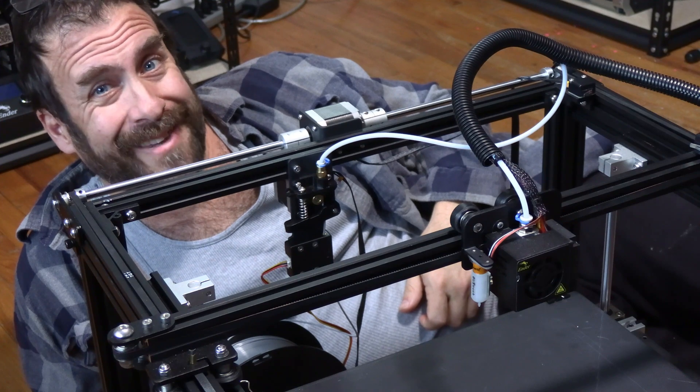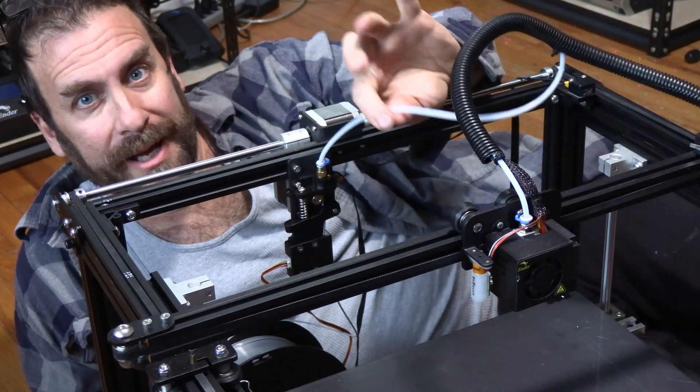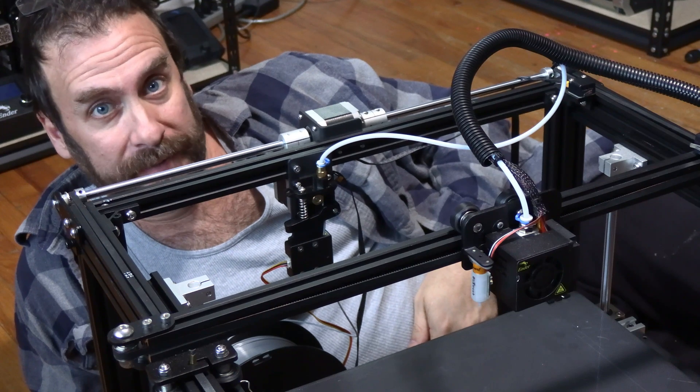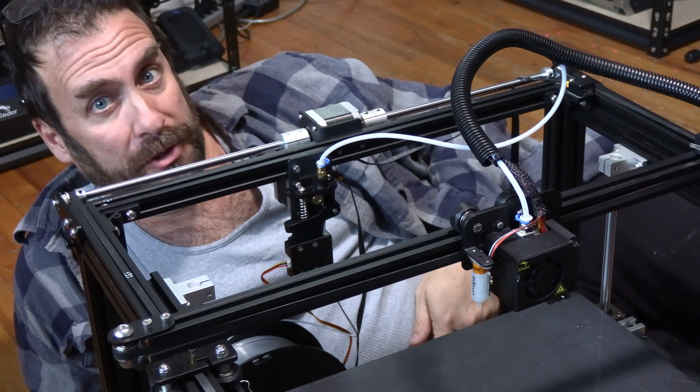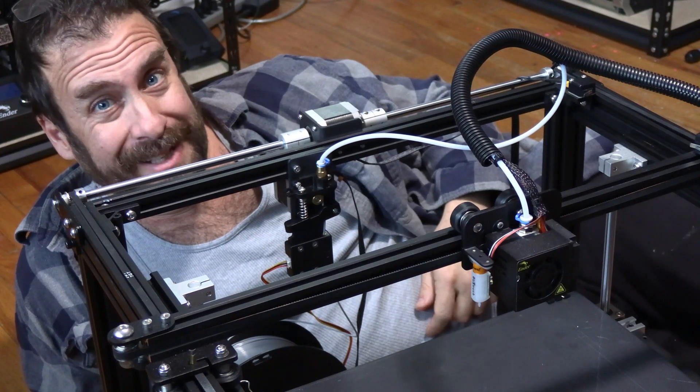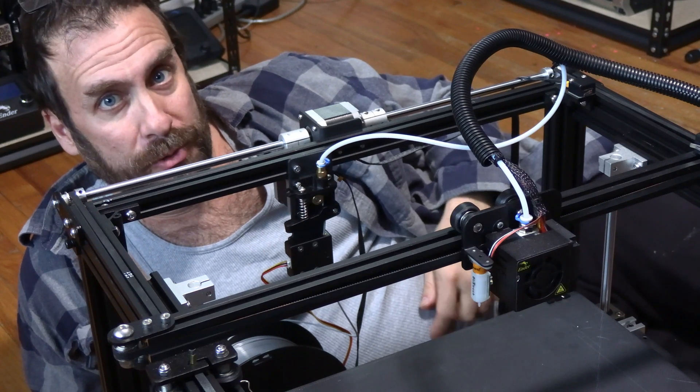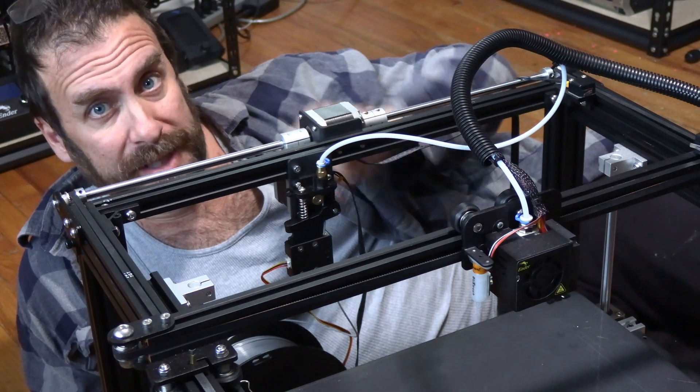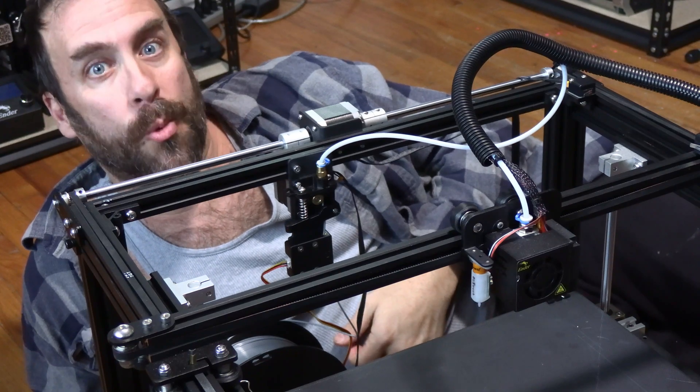If you have a machine that came with a plastic extruder and a white Bowden tube such as an Ender 3 Pro, Ender 3 version 2 and several other Creality and non-Creality machines, I highly recommend you do this upgrade and replace both of these parts because they will fail.